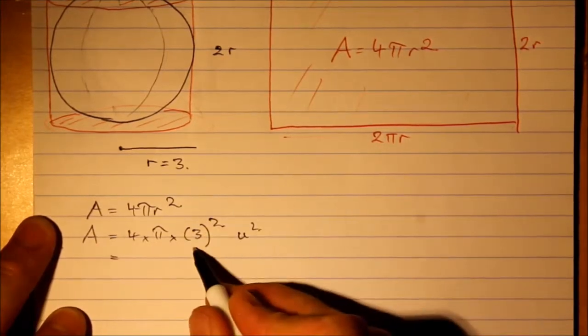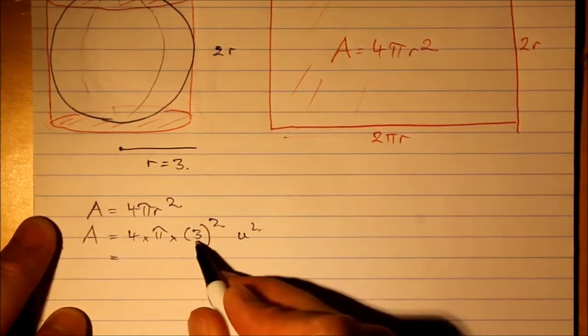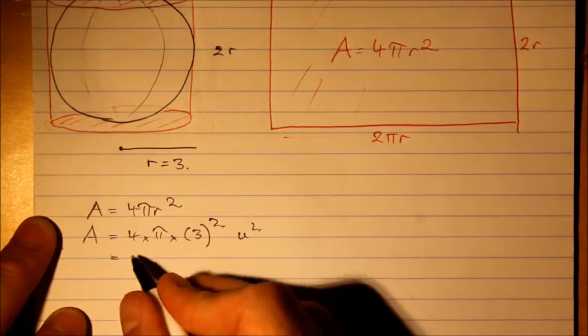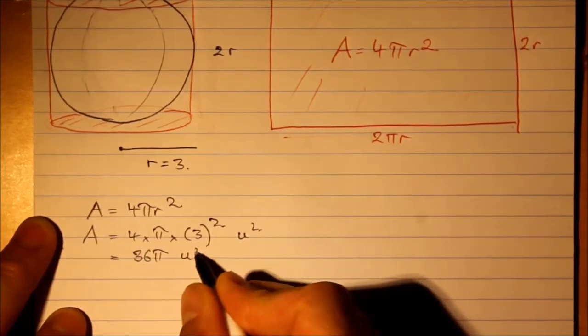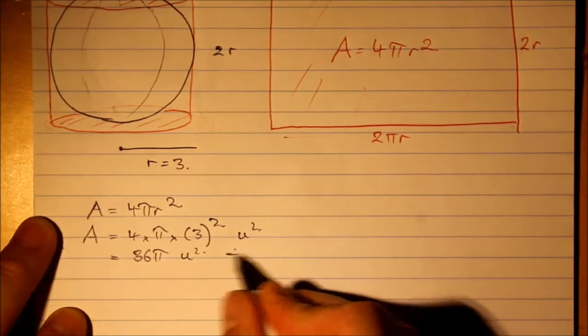Now, let's get an exact answer for this. 3 squared is 9 times 4 is 36π unit squared. That's our exact answer.